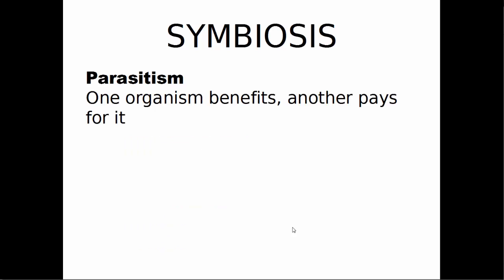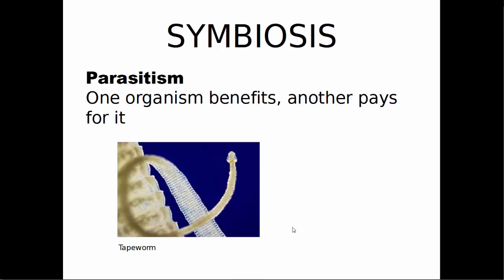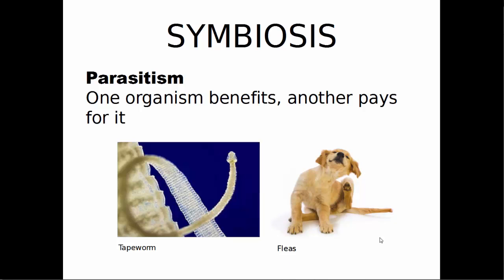The last type of symbiosis is parasitism, where one organism benefits and the other is negatively affected. For example, tapeworm can live inside the human stomach and benefit by getting nutrients out of the human digestive system, while humans are negatively affected because we get sick. Fleas are another example of parasitism because they feed off the blood of their host, and the dog is negatively affected — at the very least, annoyed.